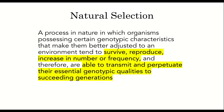What is natural selection? Here is a very wordy definition that we will later summarize in less than 10 words. Natural selection is a process in nature in which organisms possessing certain genotypic characteristics that make them better adjusted to an environment tend to survive, reproduce, increase in number or frequency, and therefore are able to transmit and perpetuate their essential genotypic qualities to succeeding generations. If you're wondering what genotypic qualities are, we will go over a definition of genotype in a future presentation.